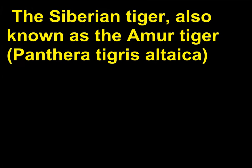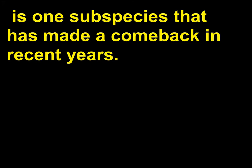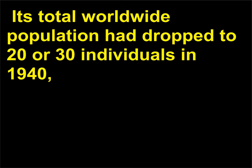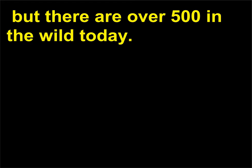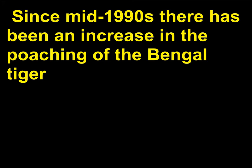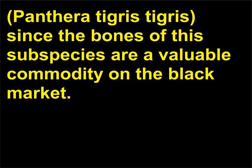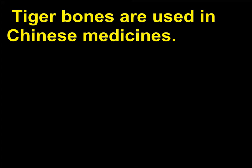The Siberian tiger, also known as the Amur tiger (Panthera tigris altaica), is one subspecies that has made a comeback in recent years. Its total worldwide population had dropped to 20 or 30 individuals in 1940, but there are over 500 in the wild today. Since the mid-1990s there has been an increase in the poaching of the Bengal tiger (Panthera tigris tigris), since the bones of this subspecies are a valuable commodity on the black market. Tiger bones are used in Chinese medicines.